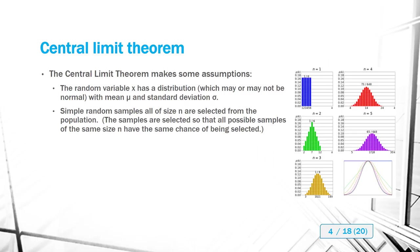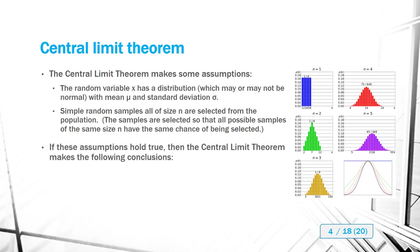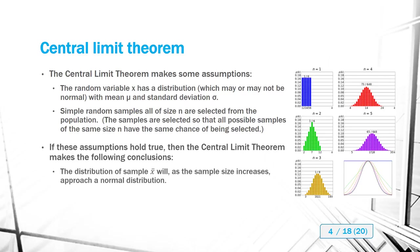Once we have these two assumptions in place, the central limit theorem makes the following conclusions. The first conclusion is that the distribution of sample means X-bar will, as the sample size increases, approach a normal distribution. This is what we've already seen from the previous section — the more times we roll the dice, the more those sample mean distributions approximated that expected value, which is the target for the population parameter.